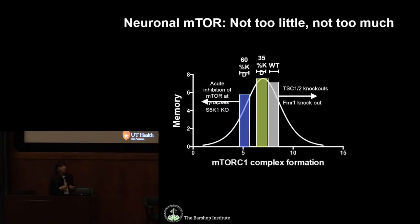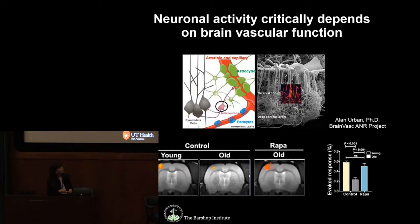We thought this must report on neuronal network function, but neuronal networks don't work in isolation — they need to be associated with vasculature to produce and sustain function. The vasculature is intimately involved in providing nutrients and energy, and that is the basis for fMRI.